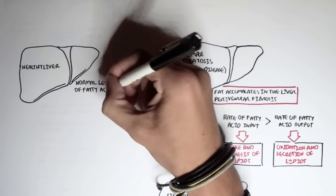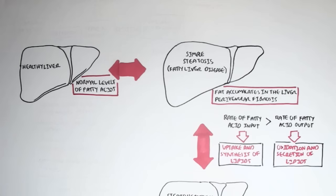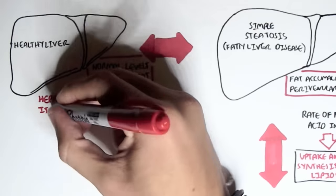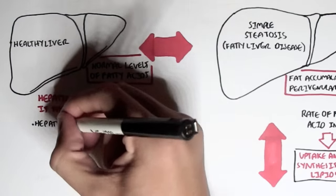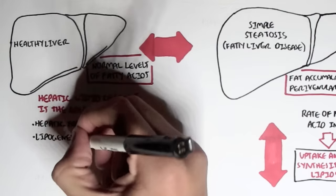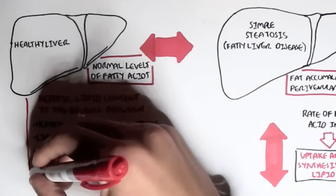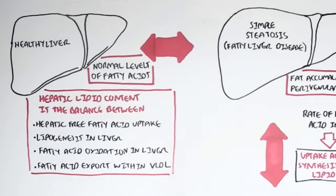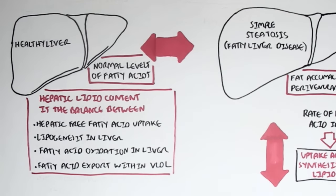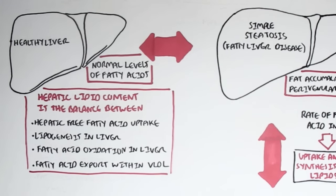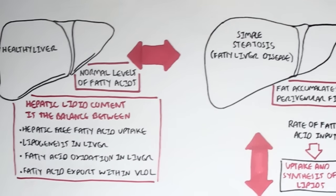The normal level of fatty acids within the liver is regulated by, or the hepatic lipid content is the balance between the processes of hepatic free fatty acid uptake, the lipogenesis within the liver, fatty acid oxidation in the liver, and fatty acid export within very low density lipoproteins. So it's a balance between rate of fatty acid input essentially and rate of fatty acid output. So what do we see in steatosis?